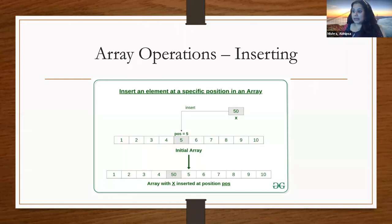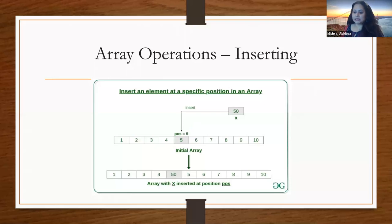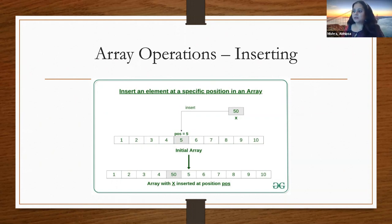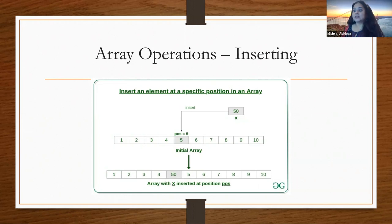Inserting in an array looks something like this. Because the array stores data at very specific locations, if you want to insert something at a specific location — let's say at index 5 — you would have to move the other elements to make space for that element. There will be specific cases where you want to insert at index 2 or 3, and in that case you would have to shift the data at multiple indexes and then insert the element at the specific index.